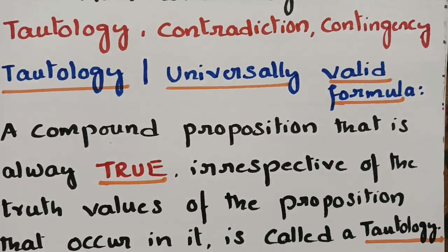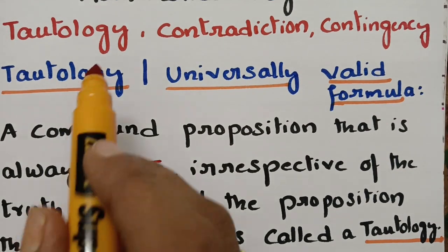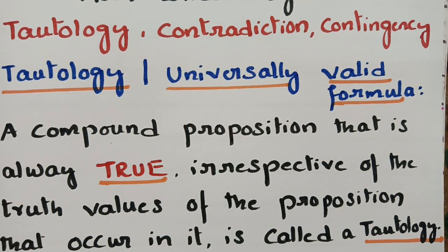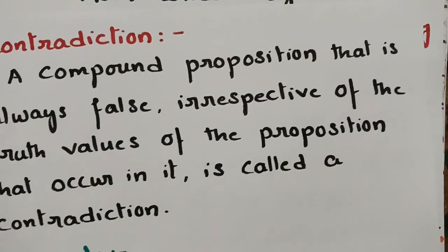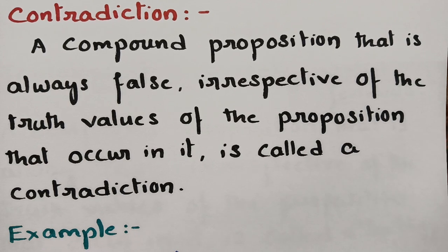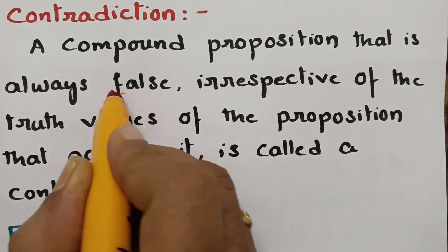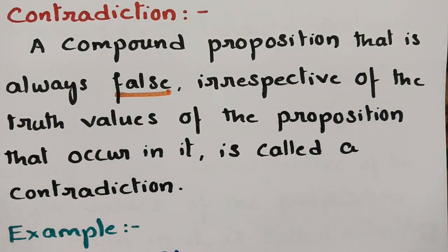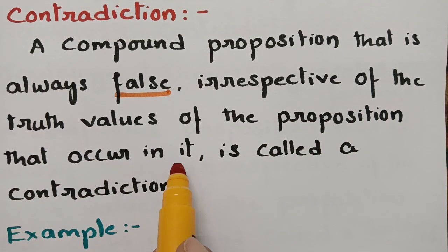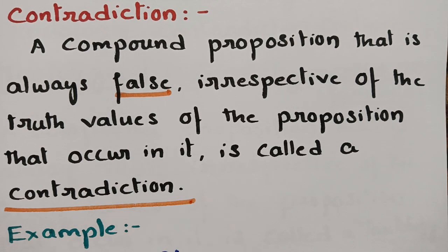Next, after tautology, comes contradiction. A compound proposition that is always false, irrespective of the truth values of the propositions that occur in it, is called a contradiction. In tautology it should be always true; in contradiction it should be always false.